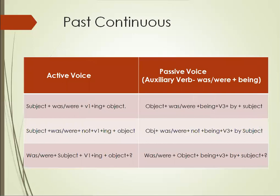Next, past continuous tense. In past continuous tense, we use the auxiliaries 'was' and 'were' with 'being' to make it passive. So in affirmative, the active structure is: subject, was/were, V1+ing, object. To change into passive, we use: object, was/were, being, V3, by, and subject. The same goes for negative and interrogative sentences.